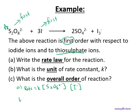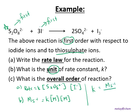What is the unit of the rate constant? The unit of rate of reaction is M/s. Setting up the equation: M/s = K × M × M, so K = M/s divided by M², which gives the unit per molar per second (M⁻¹s⁻¹). The overall order of reaction is first order plus first order, which equals second order — we write 'second order', not just the number two.